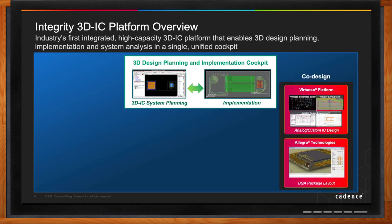The second piece is co-design. If you have analog dies stacked on top of a digital die, the Virtuoso platform is the platform of choice for analog designs — it can be done in Virtuoso, then stacked on top of the digital die. Similarly, for package design, we have our Allegro technology for package layouts. As part of the co-design flow, you can bring in the whole package file inside the Integrity platform and design your dies on top of the existing package layout from Allegro.